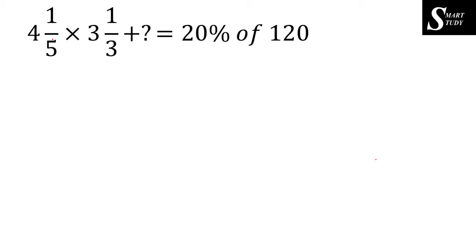The fourth question: 4 and 1/5 into 3 and 1/3, plus question mark, is equal to 20% of 120. First, 10% of 120 is 12, so 20% of 120 is 24. We have 24 on the right-hand side. Since there is a multiplication symbol, we convert the mixed fractions: 4 and 1/5 becomes 21 over 5, and 3 and 1/3 becomes 10 over 3.